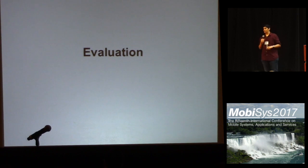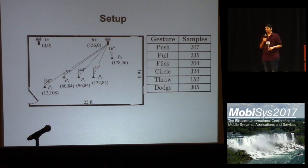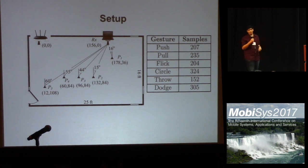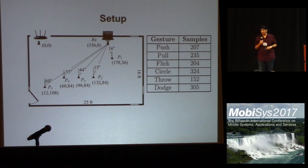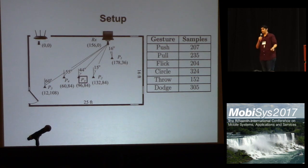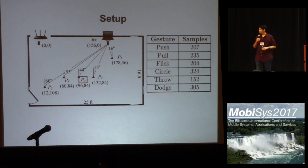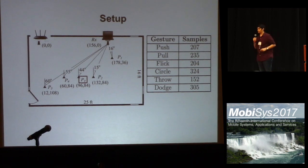Now let us see how the system performs in a real setting. Our evaluation setup was straightforward: we had a laptop as the receiver and used a commodity router. This shows five different configurations, where the value below each configuration shows the location in the environment with the router as the origin, and the value above shows the orientation angle of the person standing there. We collected training data at only one configuration and translated it to all other configurations. We collected over 1,400 samples across 8 different days from 10 different participants for 6 gestures.